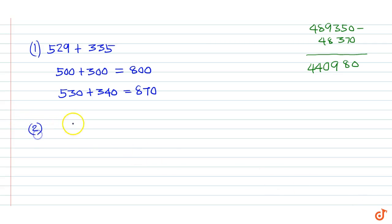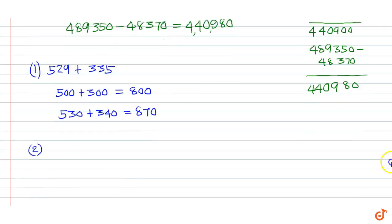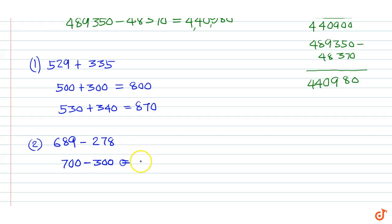Example 2: Rounding off to the nearest hundred we get 700 minus 300, which is equal to 400. Rounding off to the nearest ten we get 690 minus 280, which is equal to 410.